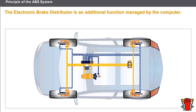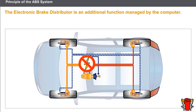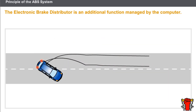The presence of ABS regulation on the rear wheels eliminates the need for a brake compensator. The electronic brake distributor is an additional function managed by the computer, which modulates the pressure to the rear wheels. If the ABS system is no longer electrically supplied, the electronic brake distributor becomes inoperative, and there is then a major risk of the rear wheels side-slipping when braking.